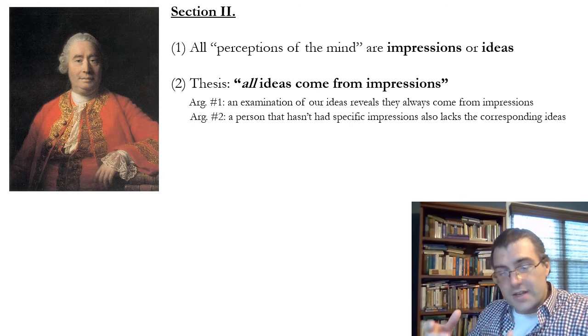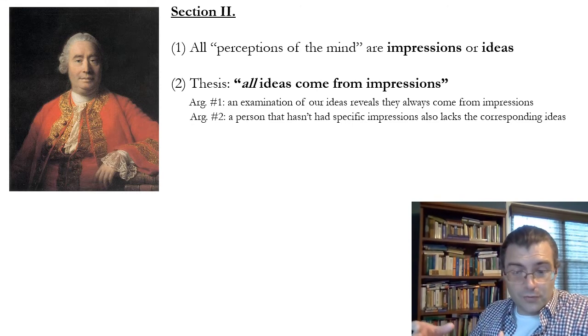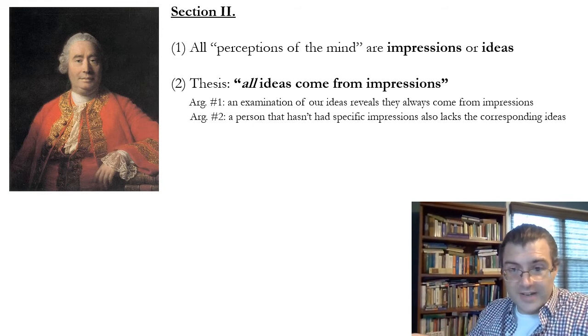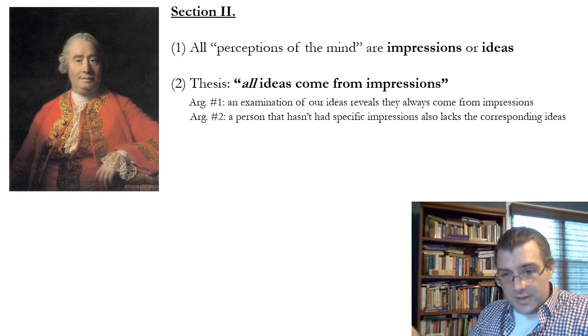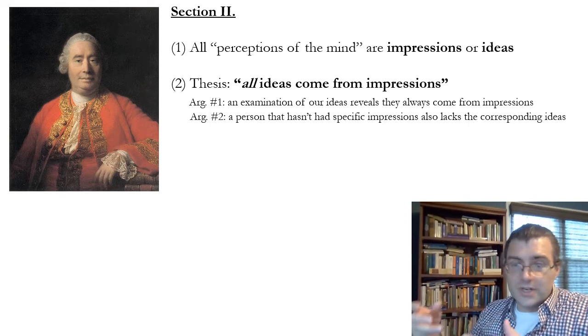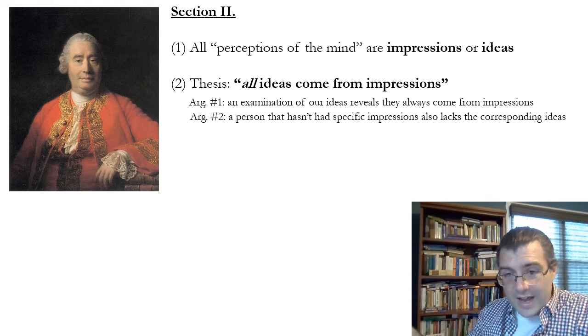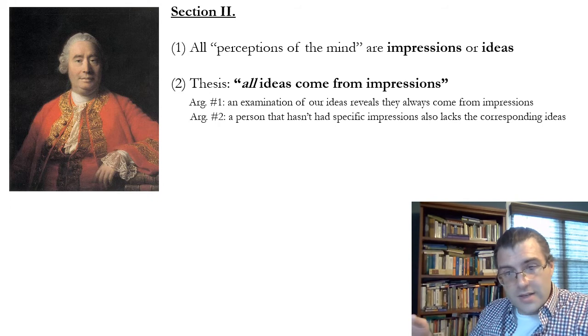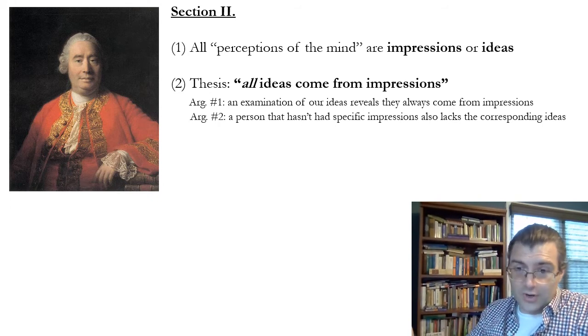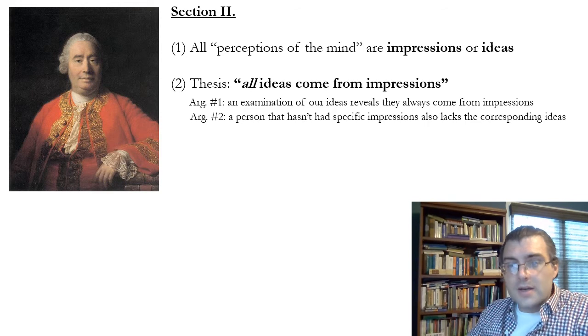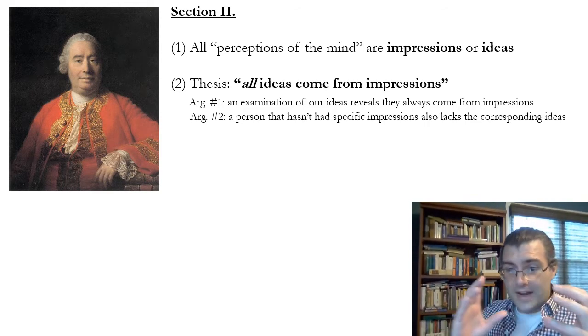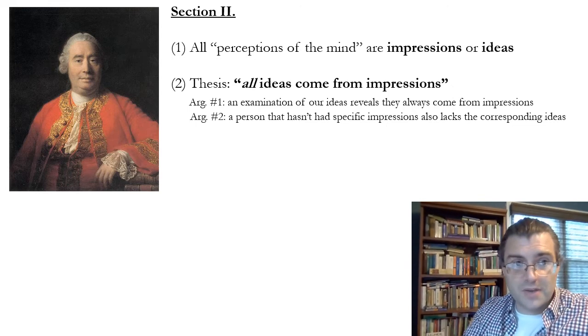He says these people don't have an idea of the relish of wine, meaning basically an alcoholic beverage made from fermented grapes, because they've never had an experience of that. So if you imagine a person in a tribe in Africa who never had a taste of wine, then they wouldn't know what the idea of wine is, likewise for a person who lives in northern Finland who'd never had the taste of wine. So we need to have an impression before we can have an idea of something. That's the second argument that Hume gives here.